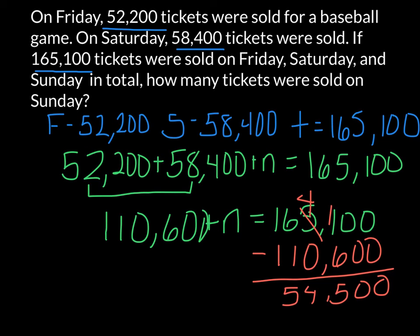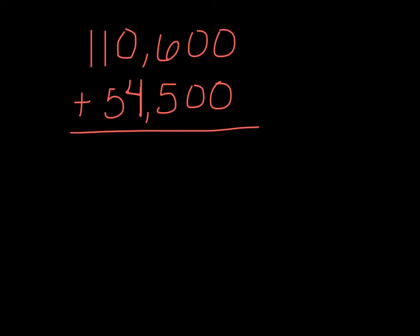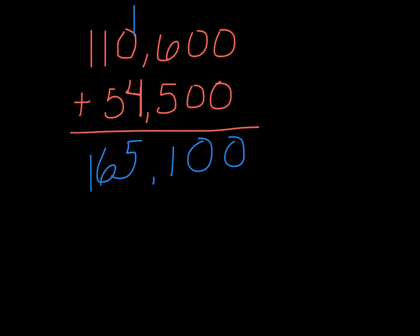We can check that equation by adding all three values up. Here I've written 110,600 — which was the Friday and Saturday totals together — plus 54,500, which is what we got. Adding these two together gives us 165,100, which was our original total, so our answer checks out. In today's lesson, you're going to need to write an equation for each of the problems in order to solve them. Thank you.